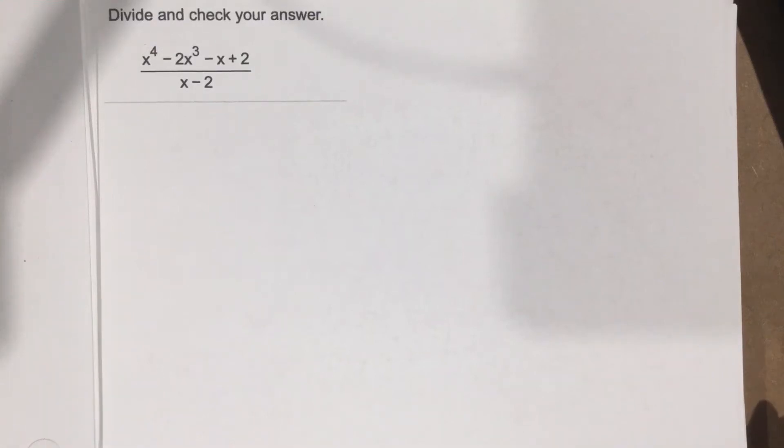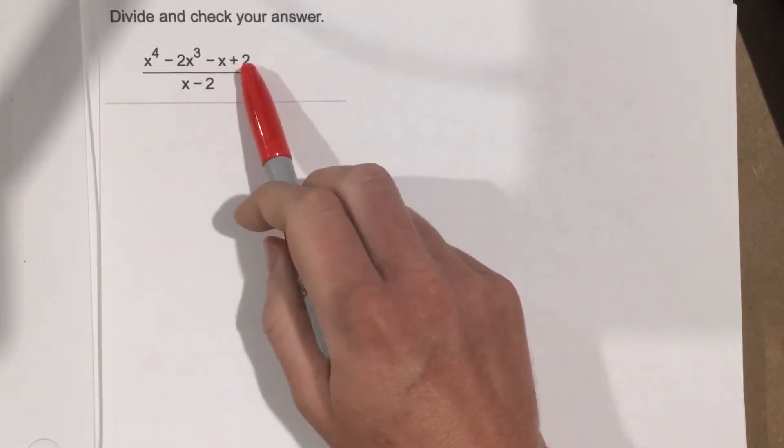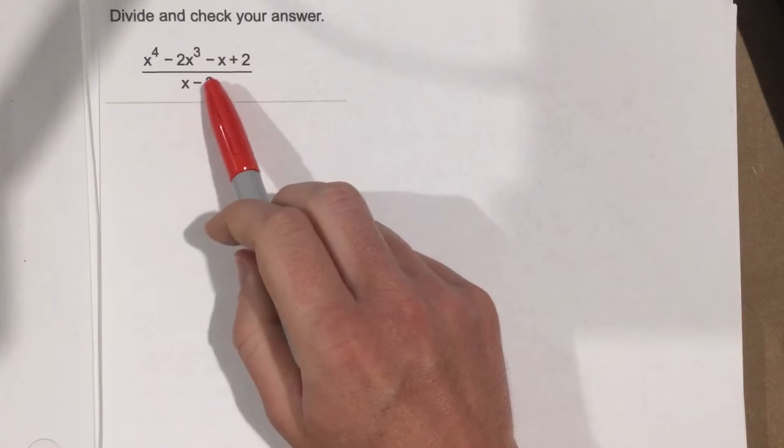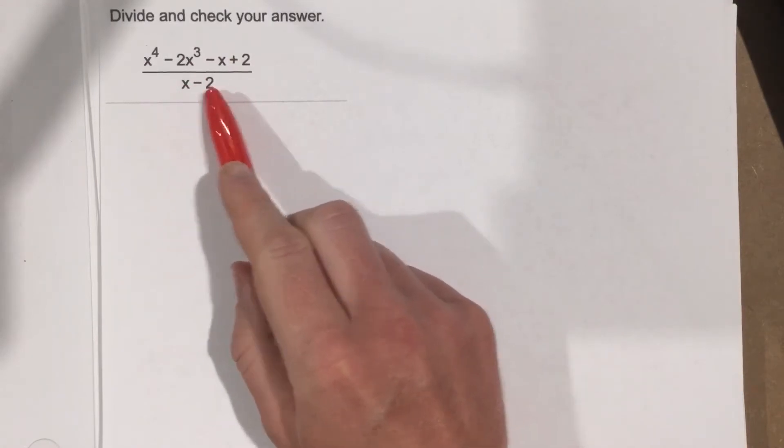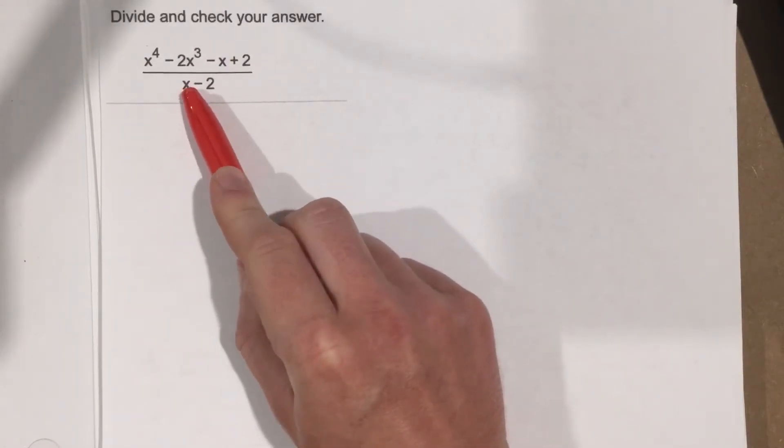This is problem number 5 from section 4.3. In this problem, they want you to take this polynomial, which has 4 terms, and divide it by this binomial, which has 2 terms, but one of the terms is degree 1.